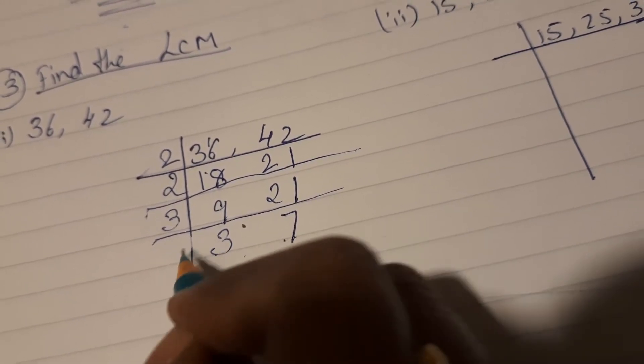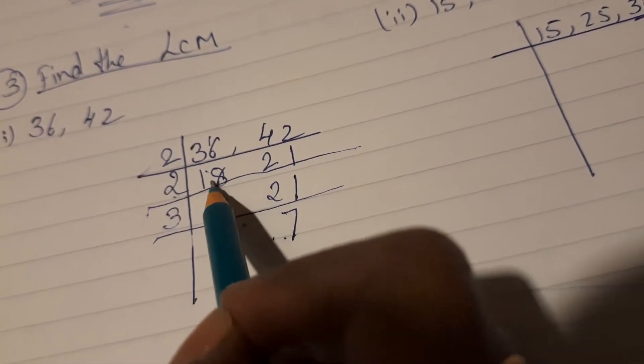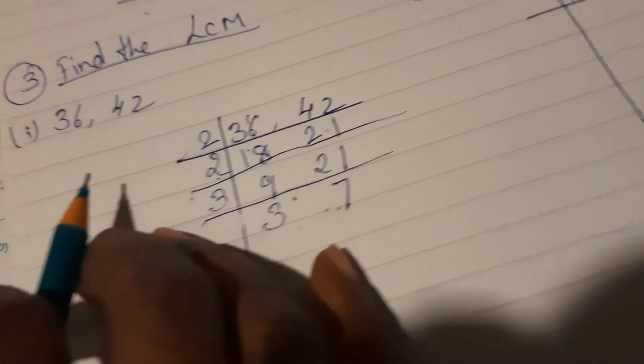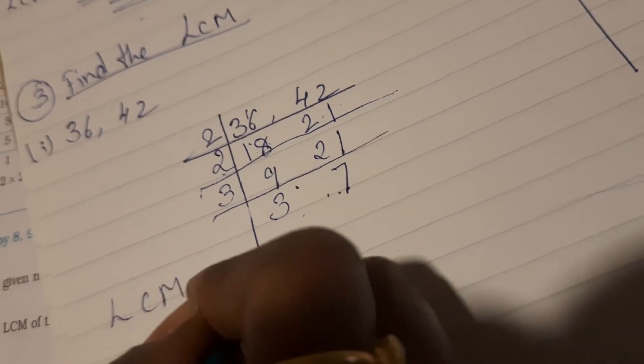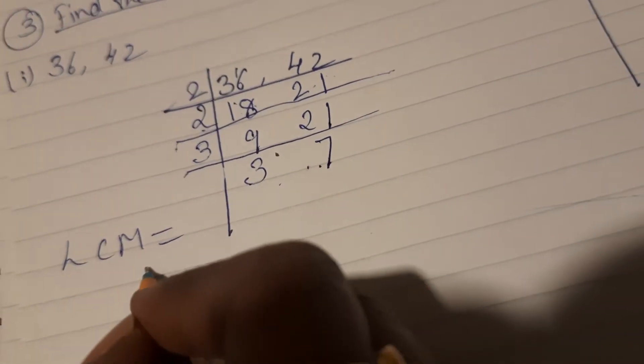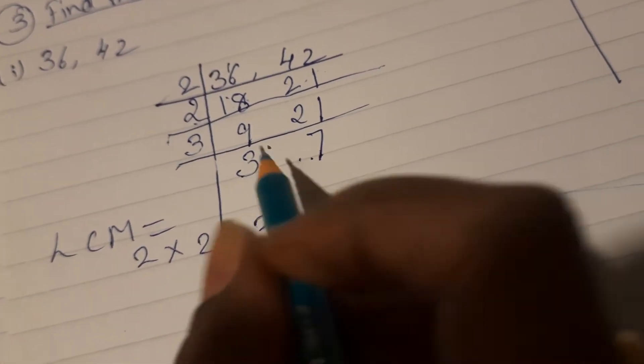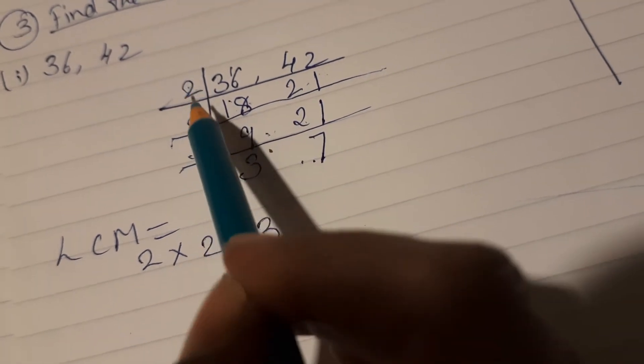Now this will not go by any number, so let it remain as it is. You can see 2, 2, and 2 was common to both the numbers. So LCM will be common into the uncommon, so you have to multiply all. 2 into 2 into 3, so you can see 3 is common to both the numbers.